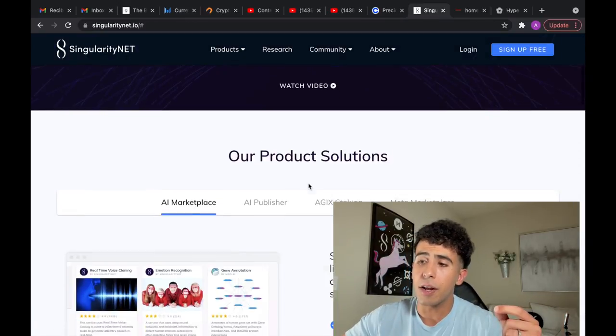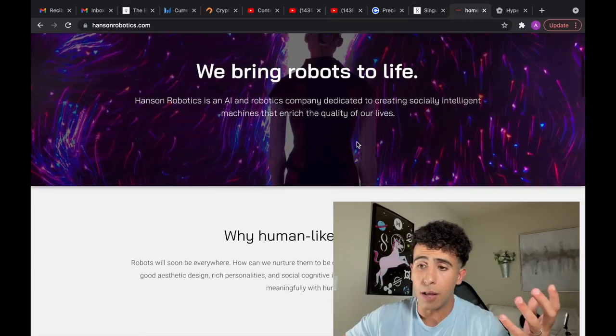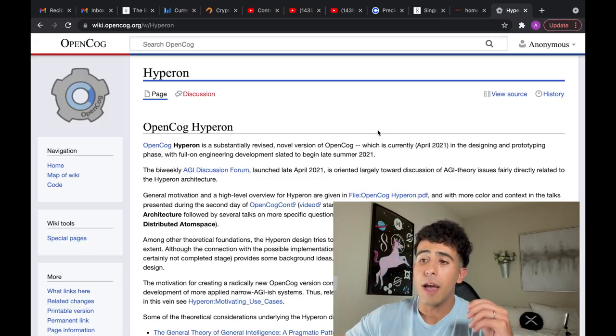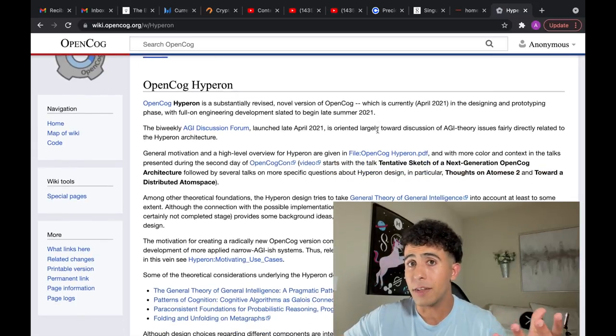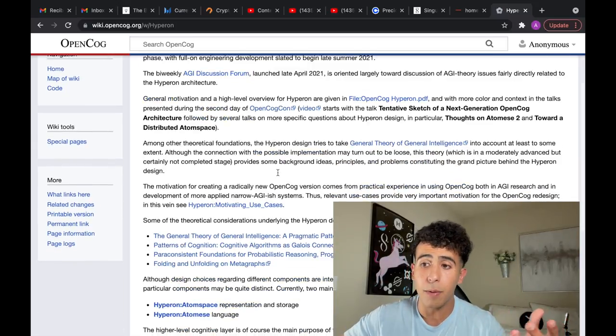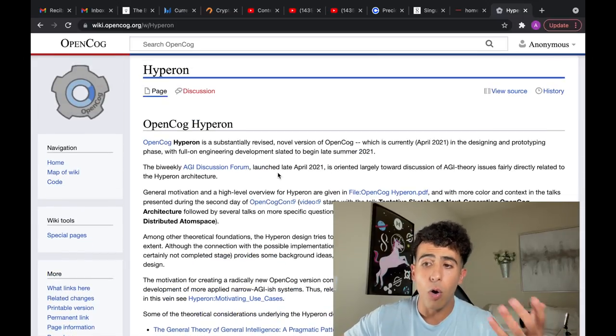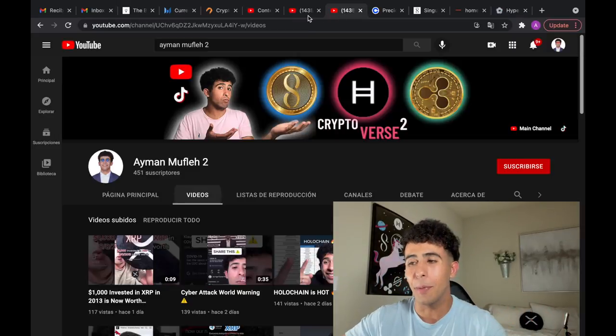Here is the SingularityNet. Basically, I'll leave a link to all of them down below. Here is the Hanson Robotics website. Make sure you check them out. And here is Hyperon OpenCog. This is a new update to OpenCog that I was speaking about, how OpenCog is constantly being updated. Hyperon OpenCog. OpenCog Hyperon is something that you need to know about.